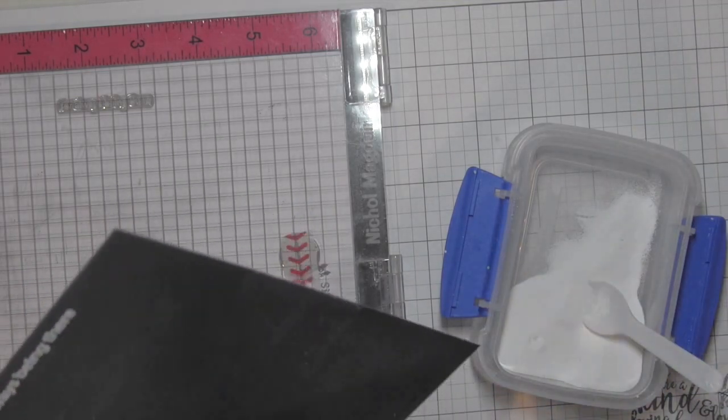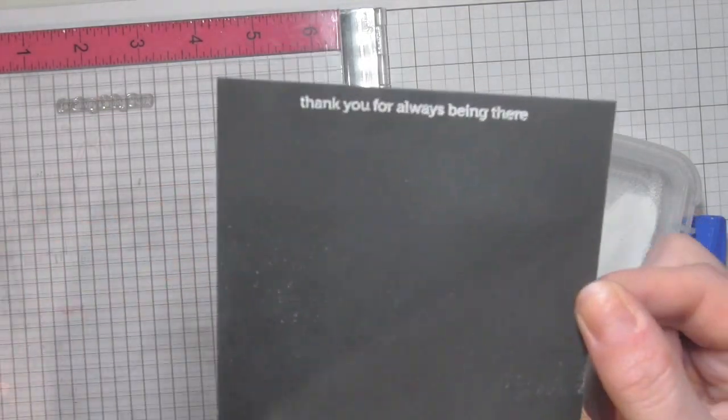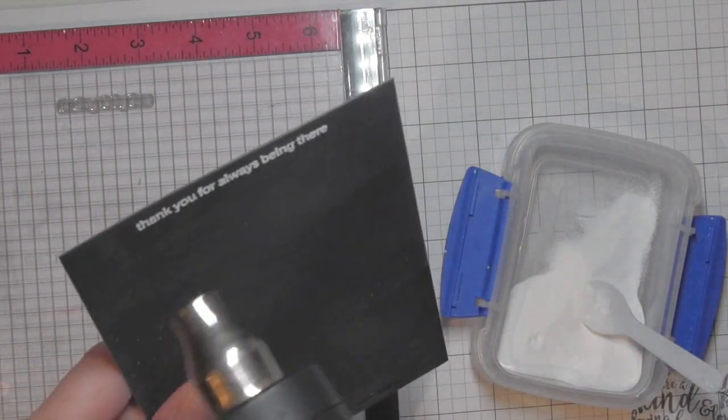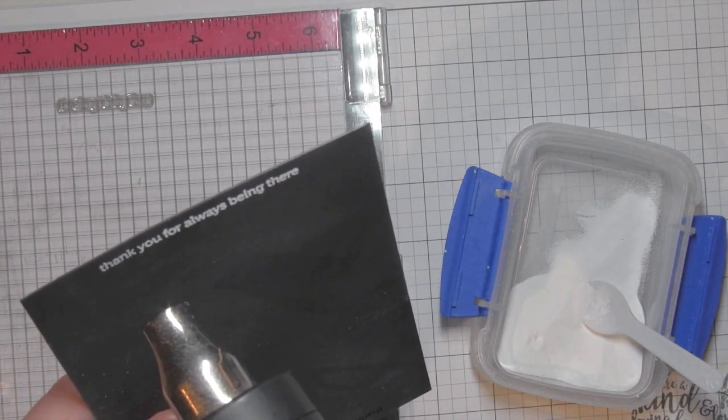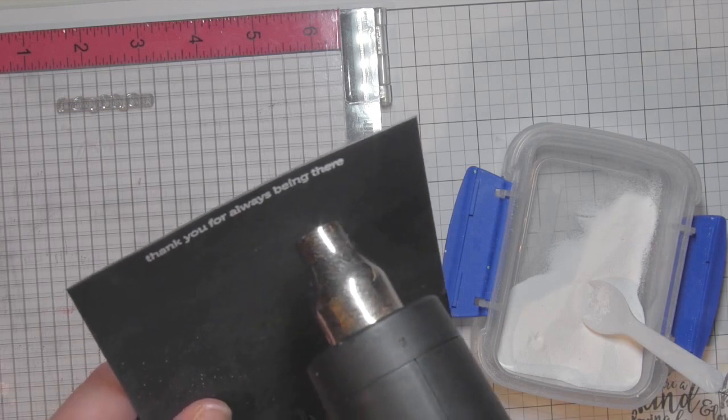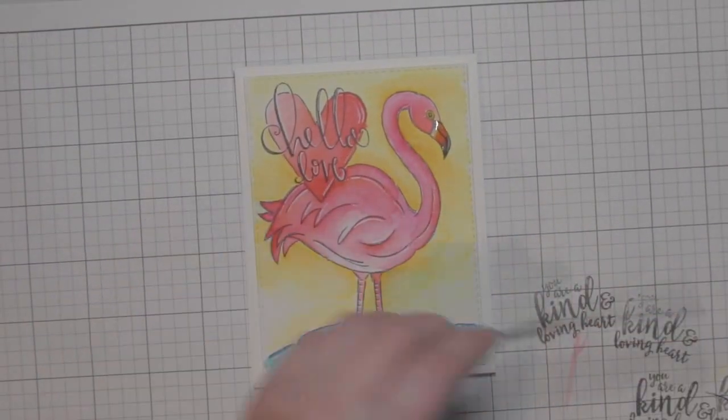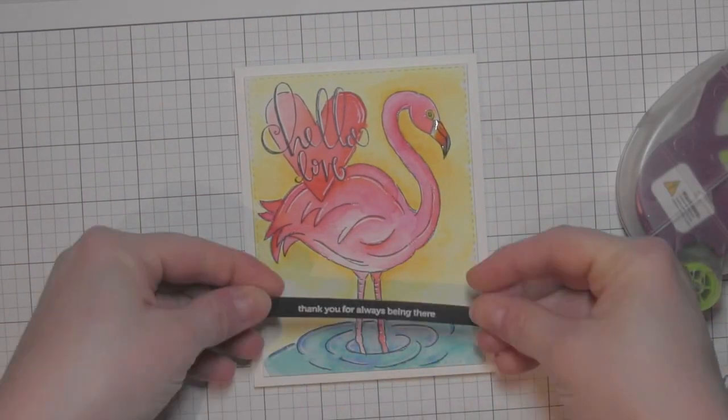Once this is heat embossed, I will just trim it into a thin strip and adhere it right over my background panel. Stamping and embossing a greeting, especially a really tiny thin one like this on black cardstock with white embossing powder, is one of my favorite ways to add a greeting to a design. I think it really adds a lot to this. The black pops.